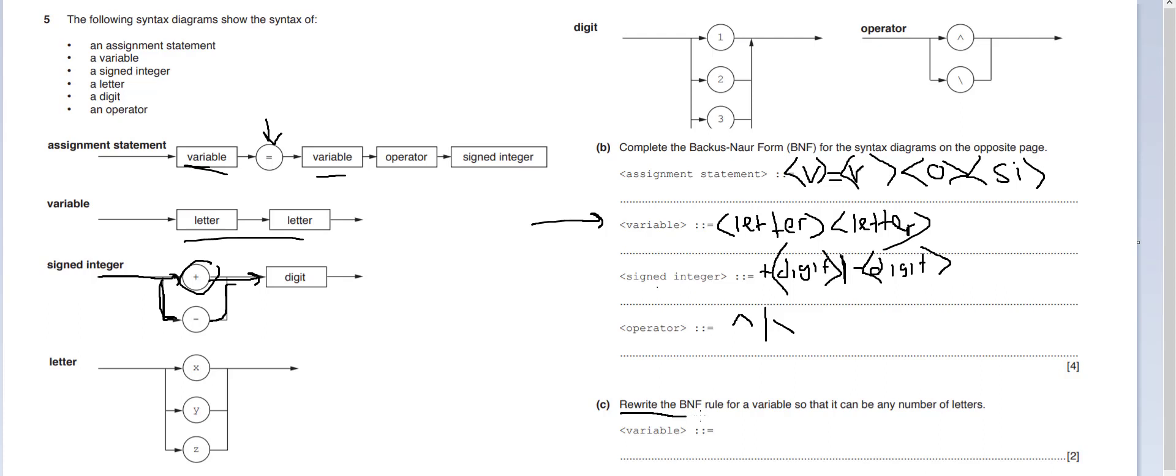We've been given a new challenge. Rewrite the BNF rule for a variable so that it could be any number of letters. Now, we looked at this at the beginning of the video. See if you can do this yourself first. Okay. So what you could do is a variable could be a letter, just by itself, at the minimum. Or it could be a variable recursive, so we can make it letter, which will mean that we can use a recursive amount of letters in our variable.